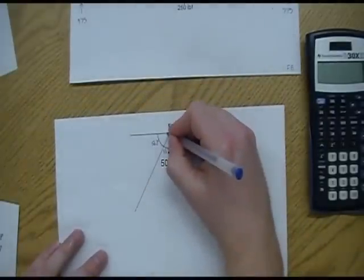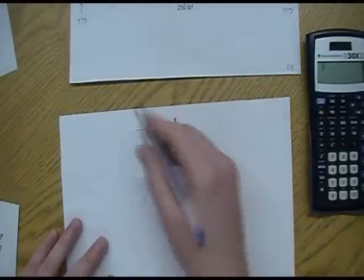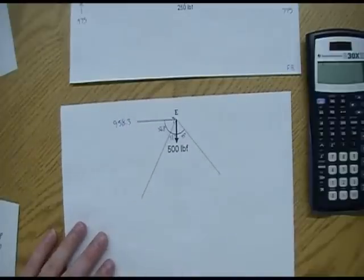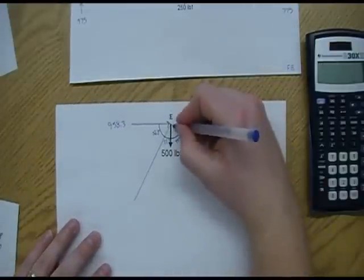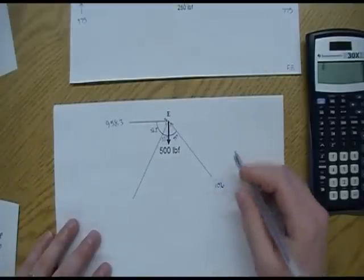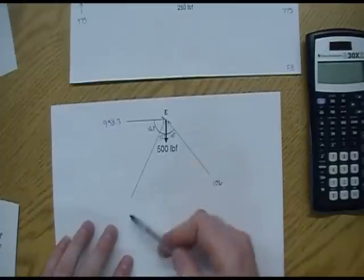We need to update this guy. We knew from our previous diagram that this top one was pushing over at 958.3. We knew that this one is pointing up and to the left at 1096. This is the only one that we don't know.